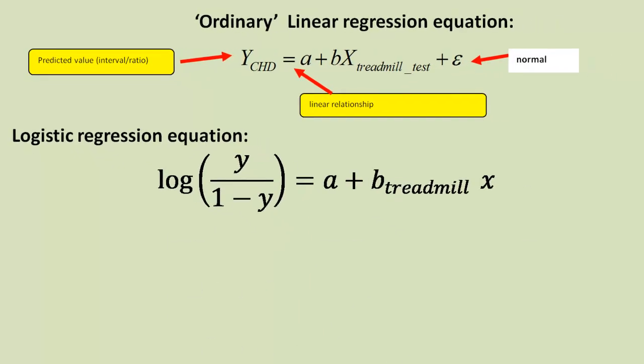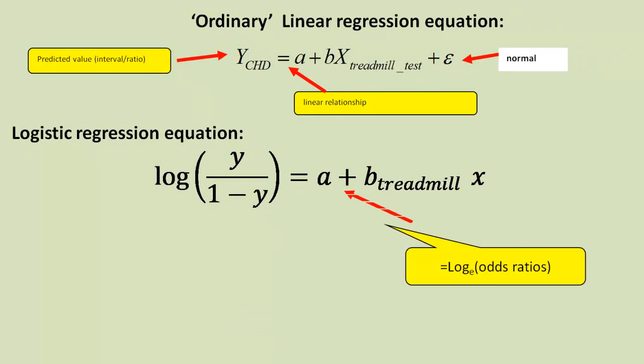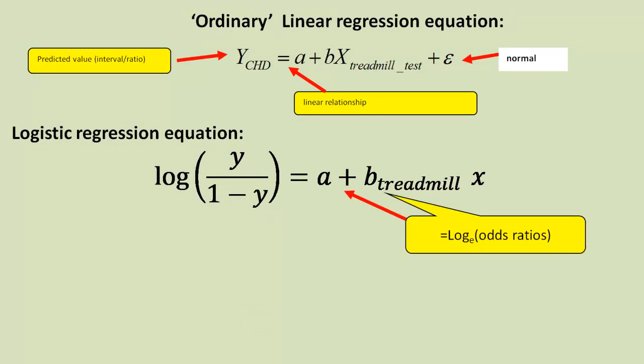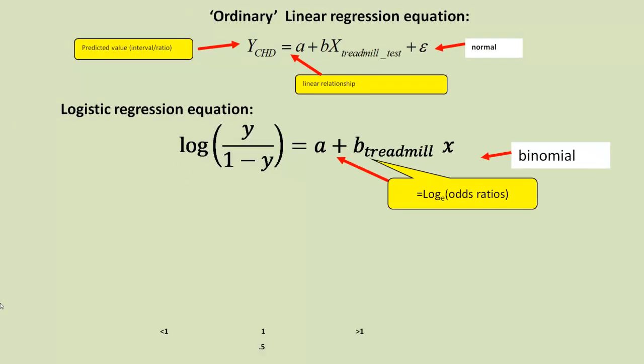And then it'll be something like this. Notice we still have the two parameters there, but this time we're not given just values based upon the original variable. Here they are actually the logs of the odds ratios. So the logs of the odds ratios, the a and b values there. And we still have an error term, but we don't usually show it in the equation now, and we actually don't have normally distributed errors. We have what's known as binomial distributed errors.